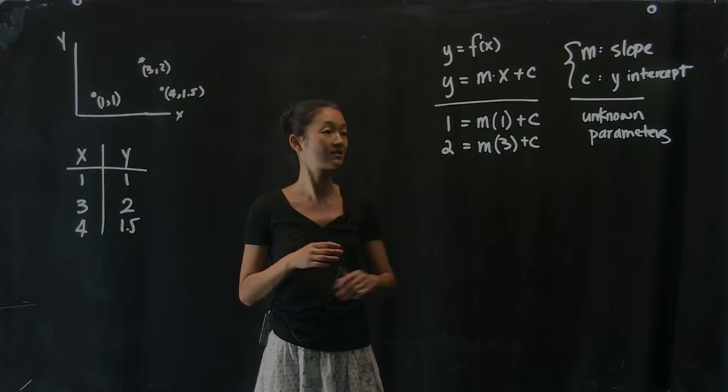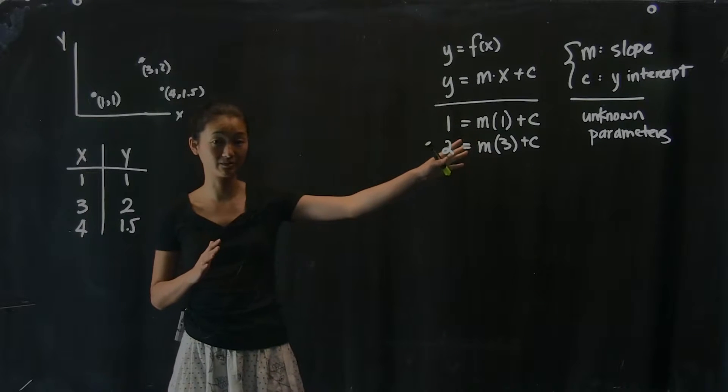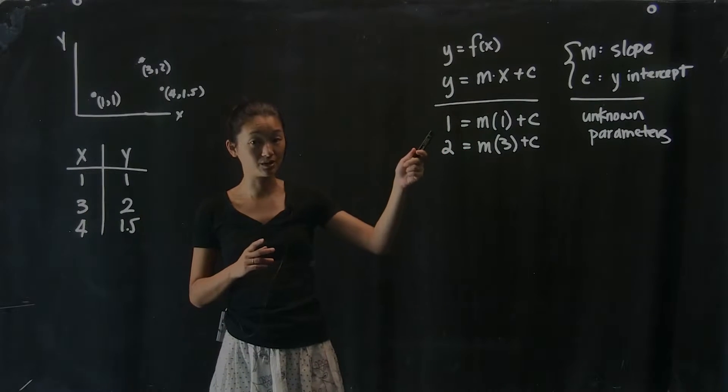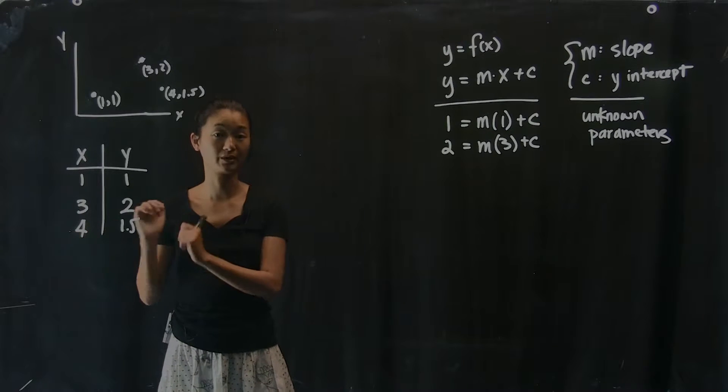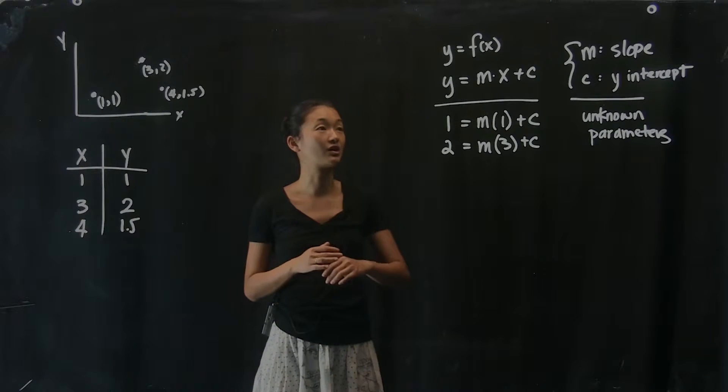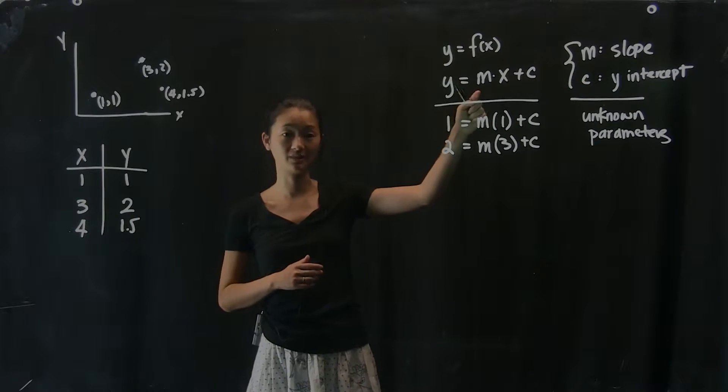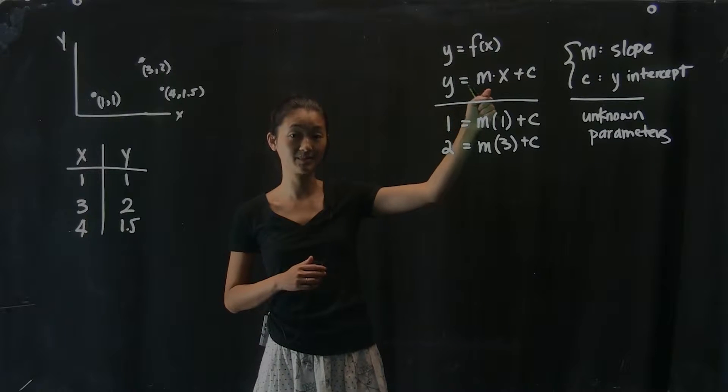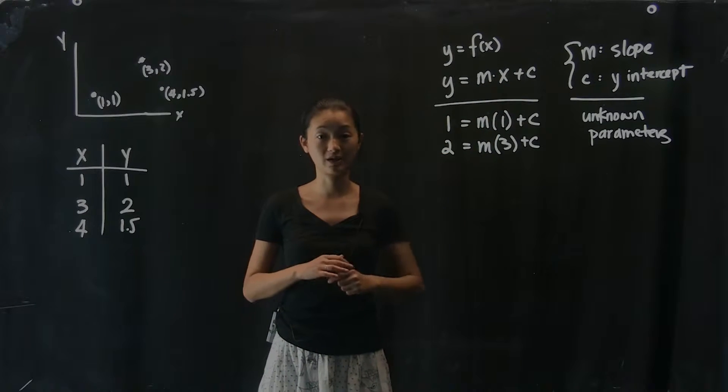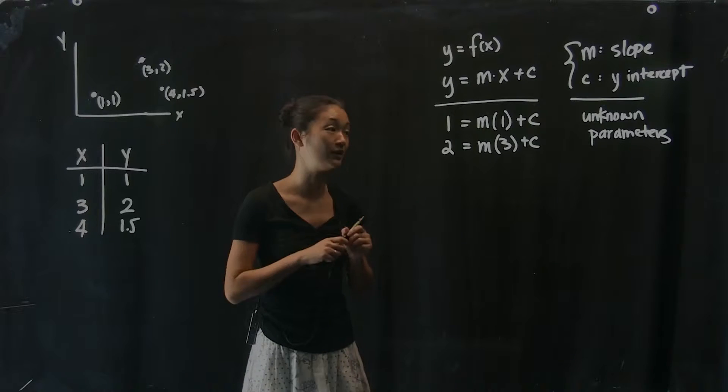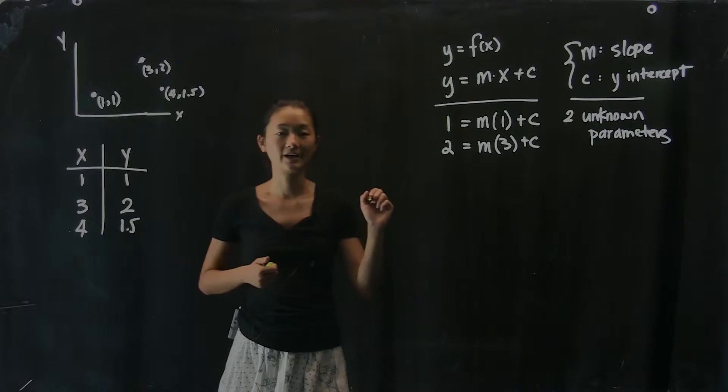So let's go about the exercise of updating our system of equations with the same two unknowns to accommodate for this extra point that we now have. So again, we have y equals m, which is the slope of the line, times x, plus c, which is the y-intercept. So we still have these two unknown parameters.